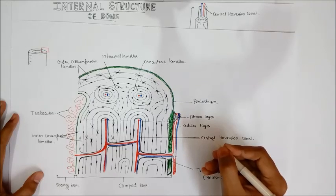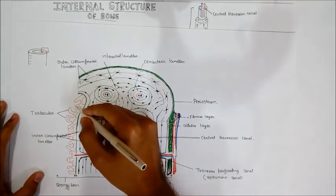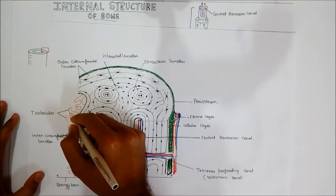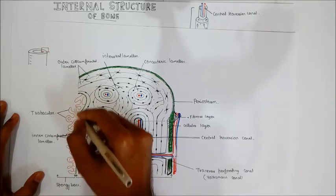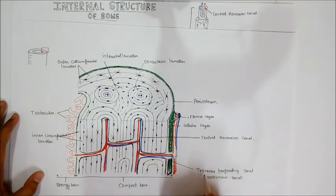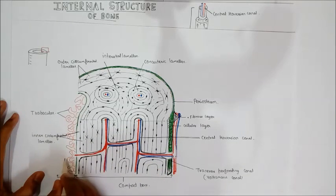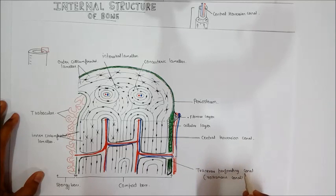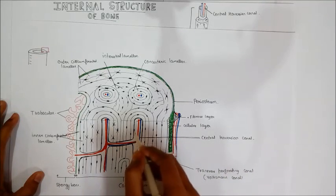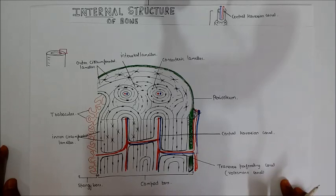The spongy bone unit is called the trabeculae, which projects into the marrow cavity as a 3D latticework structure. The transverse perforating canals are the canals which connect neighboring osteons to each other and also connect the osteons with the medullary cavity. That's the end of the video — I hope you enjoyed it.